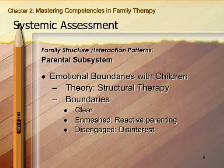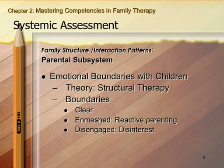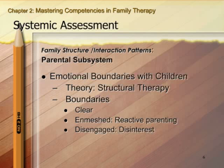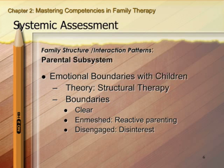The next thing to assess are the emotional boundaries between parents and children, which comes primarily from structural family therapy. We use the same terms as with couple boundaries: clear, enmeshed, and disengaged. When looking at the parent-child relationship, enmeshed parenting often takes the form of reactive parenting, where the parent is so worried and entwined that their identity is intermeshed with the child's — if the child is upset, the parent is upset.